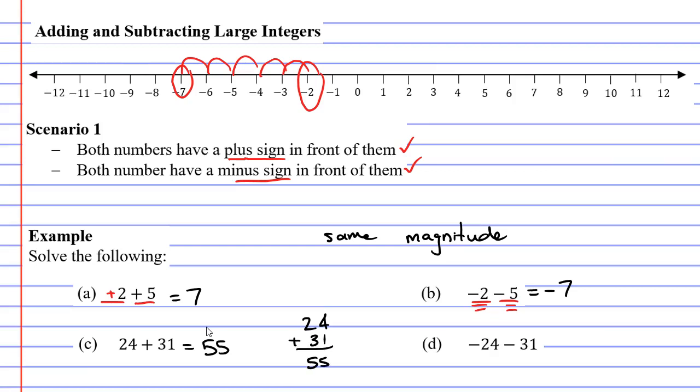Which means that question D would have the same magnitude of 55. And we know that because it's got the exact same numbers as question C. And because question D had the minus sign in front of both of them, we know it's going to be negative 55.